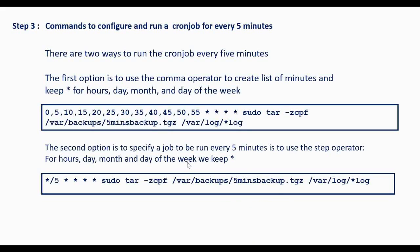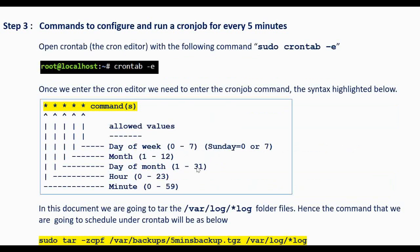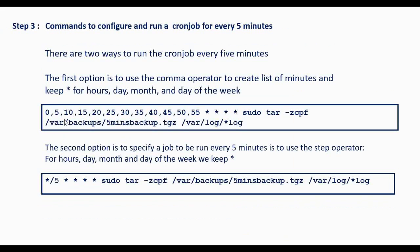To take the backup every 5 minutes there are two ways. The first method: you can give 0, 5, 10 — incrementing by 5 — and for hours, day, month and day of the week you simply give asterisk, followed by the actual Linux command sudo tar to save the backup of /var/log.